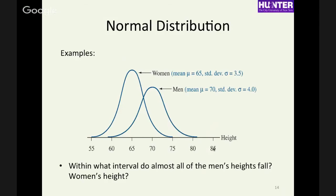The height of people tends to follow a normal distribution. Here's a hypothetical example: the mean height for women is 65 inches (about five foot three) with a standard deviation of 3.5, and for men a mean of 70 with a standard deviation of four. Those stack up to each other showing the difference in means and the difference in standard deviations.